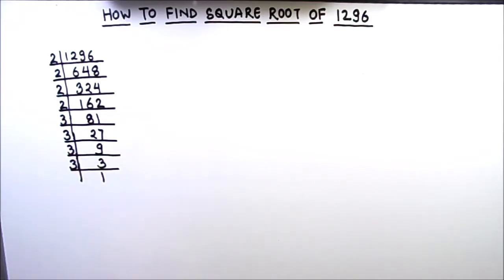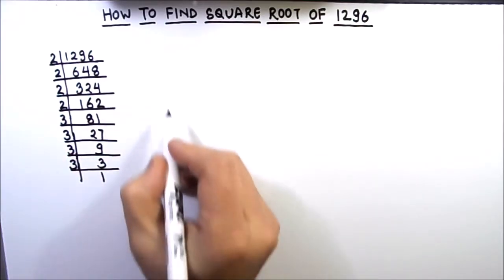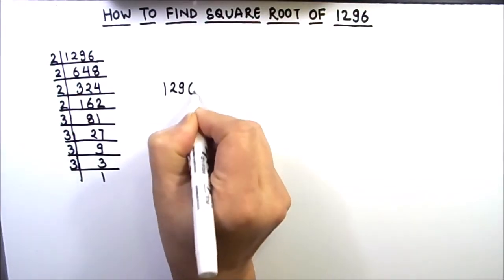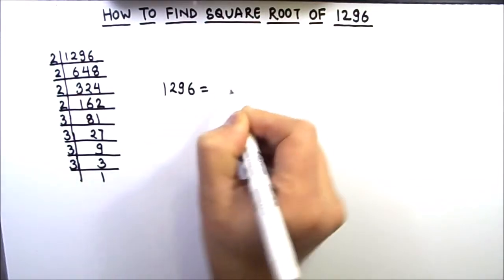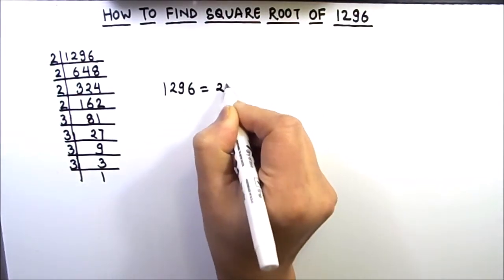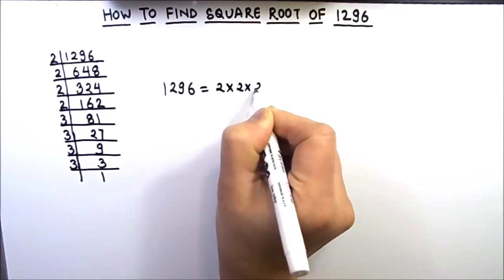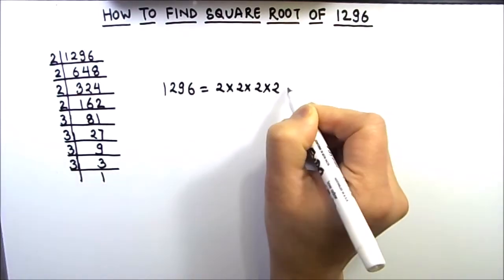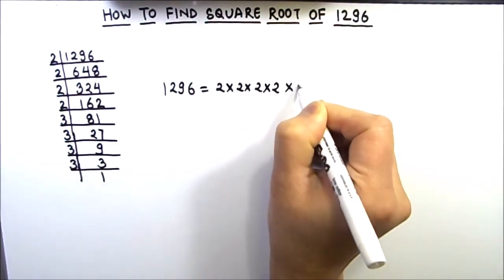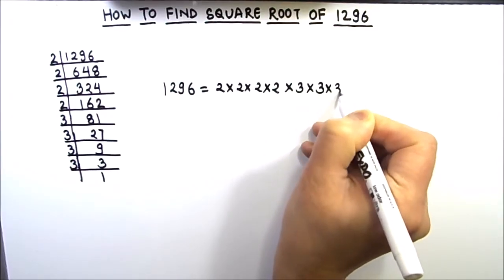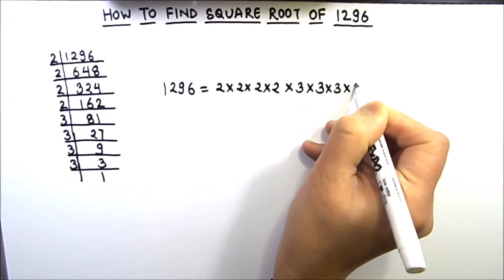Now we have all the prime factors of this number. We are going to write this number as the product of its prime factors, which is 2 times 2 times 2 times 2 times 3 times 3 times 3 times 3.